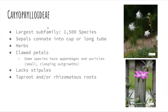The first subfamily I will be talking about is Caryophylloideae. This is the largest subfamily, containing approximately 1,500 species. Its sepals connate into a cup or long tube. It is typically found as herbs. It has clawed petals, with some species having appendages and auricles, which are small clasping outgrowths. It lacks stipules and has a taproot and/or rhizomatous roots.